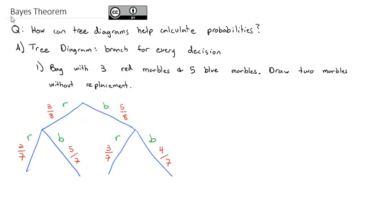What's nice about a tree diagram is it gives us an easy way to calculate all the possibilities. The first branch is red then red, the second is red then blue, the third is blue then red, and the fourth is blue then blue. We can quickly calculate the probability of any one of these outcomes by multiplying down the branch — it's really an 'and' probability. For red and red: three-eighths times two-sevenths gives 0.1071.